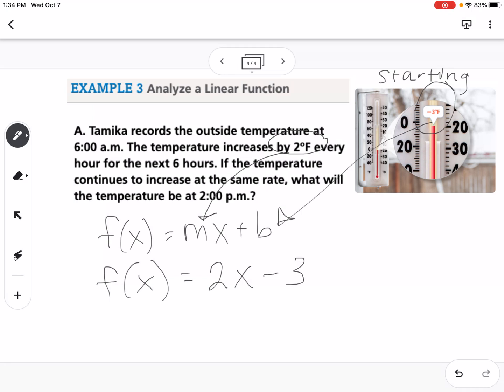So then it says, what would the temperature be at 2 p.m.? If we start at 6 a.m. and we count forward to 2 p.m., that would be a total of 8 hours. So that means that we're going to plug 8 into our function. So we're going to find f of 8, which would be 2 times 8 minus 3. So that would be 16 minus 3. So that would be 13 degrees Fahrenheit.